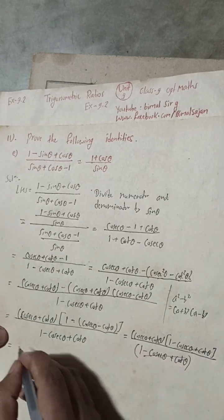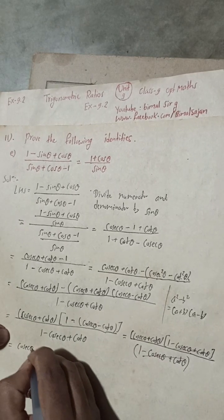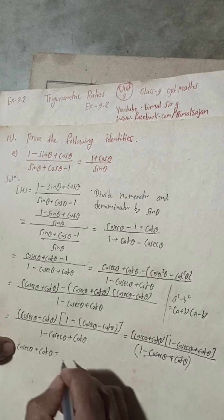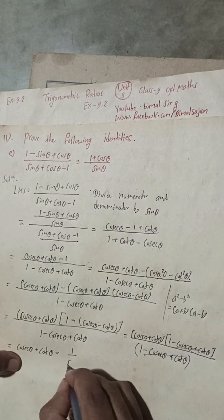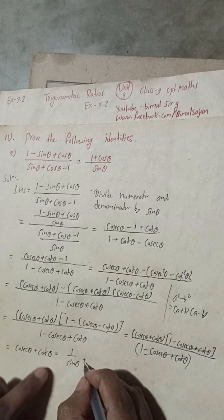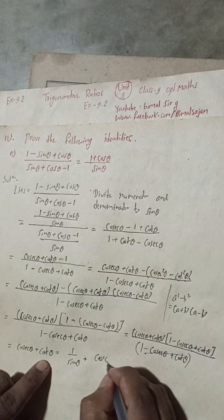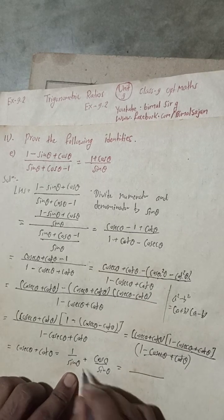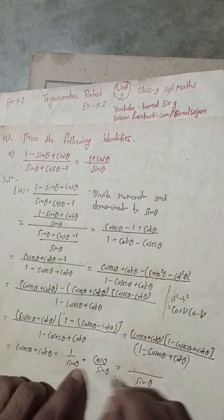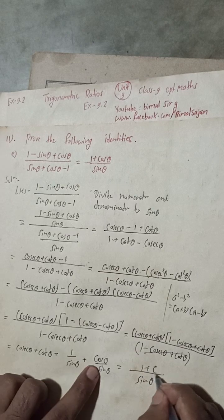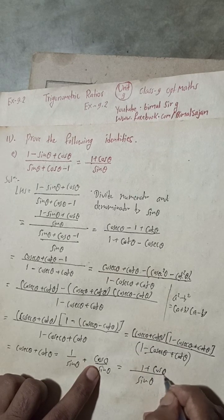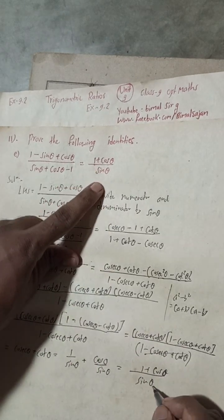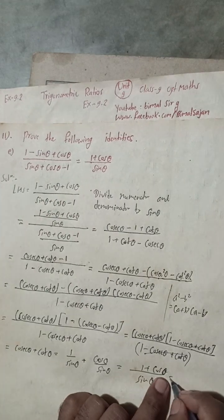What remains is (cosecθ + cotθ). Writing cosecθ as 1/sinθ and cotθ as cosθ/sinθ, since they are like terms sinθ is common in the denominator. This gives (1 + cosθ)/sinθ, which is our required RHS. Hence proved.